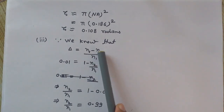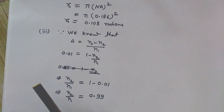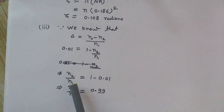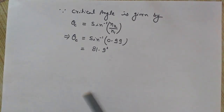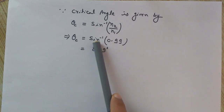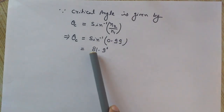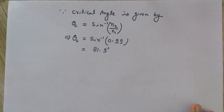From delta = 1 − n2/n1, we get n2/n1 = 0.99. Substituting this value into the critical angle formula: θc = sin⁻¹(0.99) = 81.9 degrees. So we have now calculated all three values: the numerical aperture, the solid acceptance angle, and the critical angle from the given information.